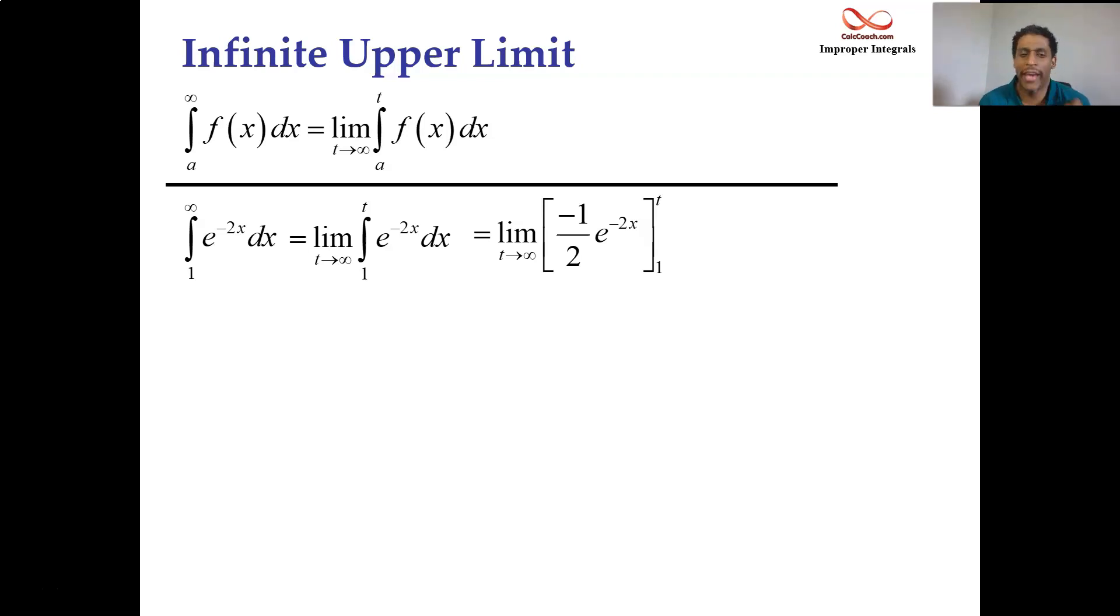But before we do that, we're going to find out that it's better to not have negative exponents. If there is a negative exponent, you're going to need to move that and put it in the denominator. You'll have an easier time knowing what's going on with what's happening at infinity when it's in the denominator. So rewrite this, put the e to the 2x on the bottom with the 2, plug in the t, plug in the 1, and now do the limit as t goes to infinity.